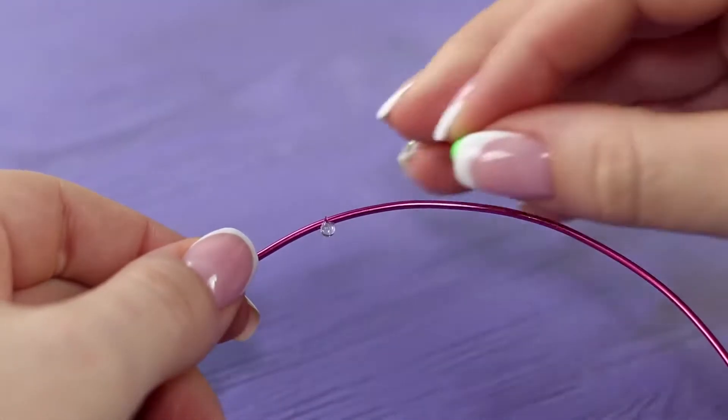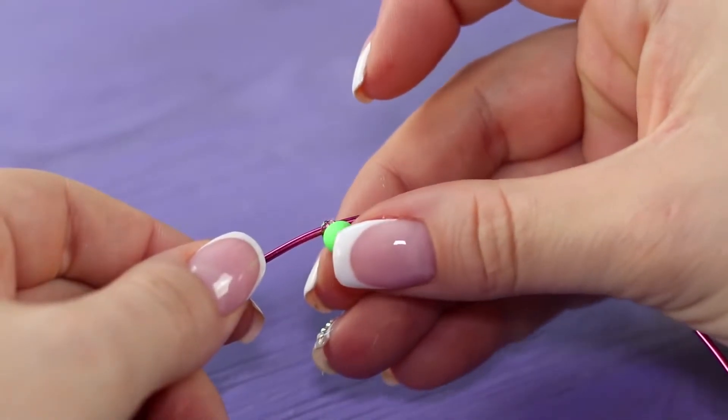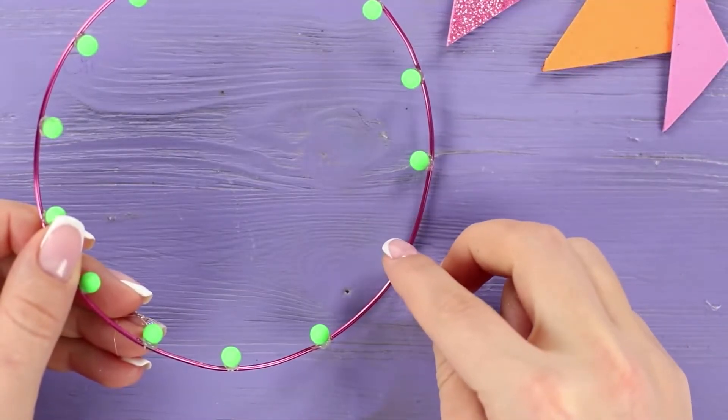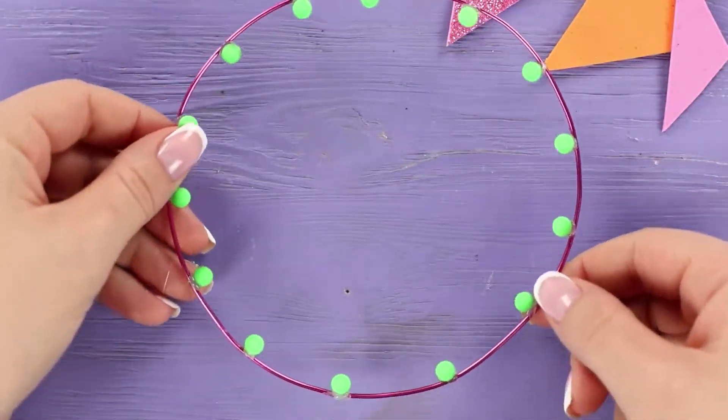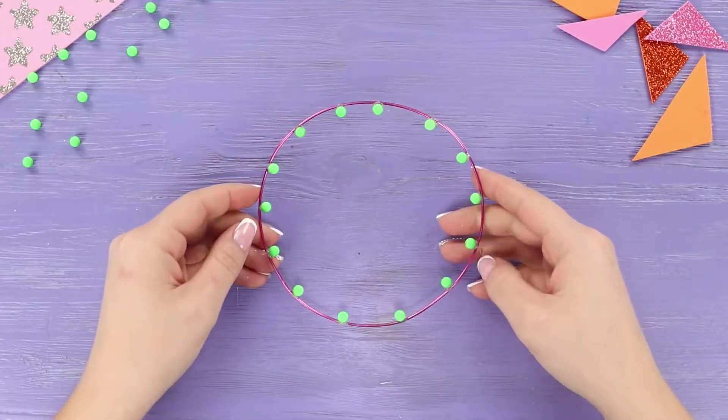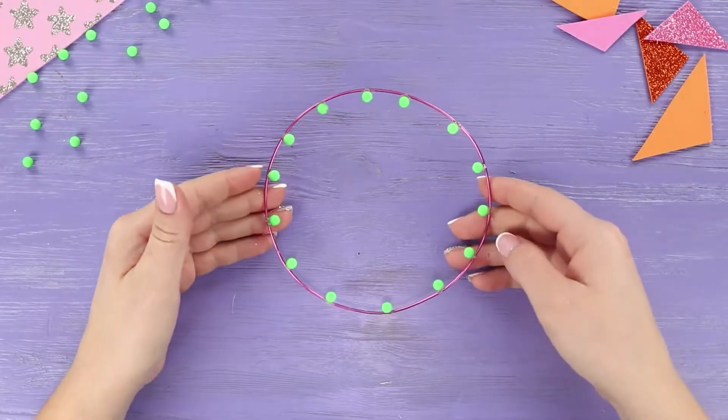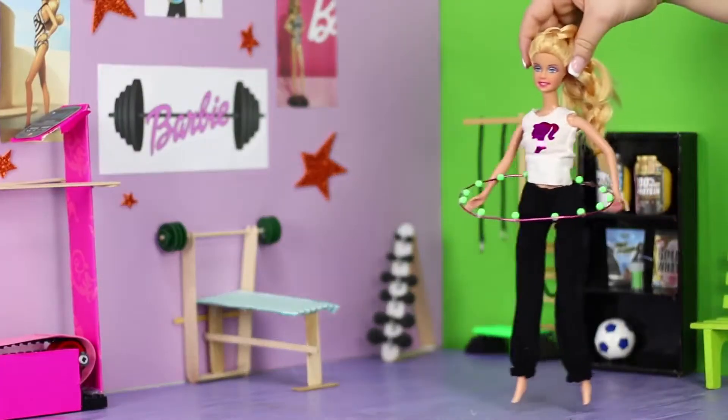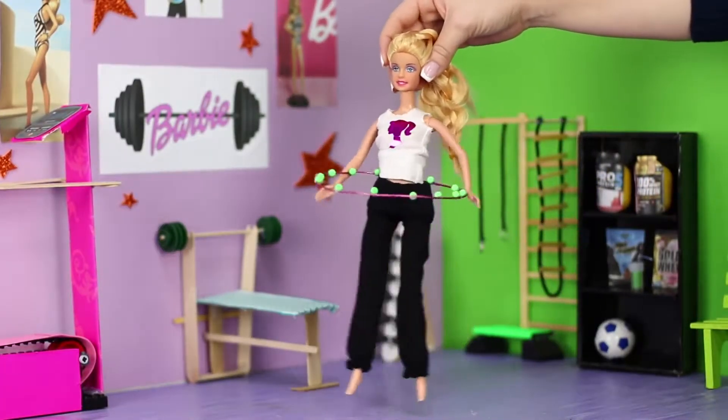Secure the beads on the inside of the ring using a hot glue gun. String the beads at equal distance from each other. The result is a sporty hula hoop with massage balls! They say that it's time to lose weight when you step into a hula hoop and it fits you!